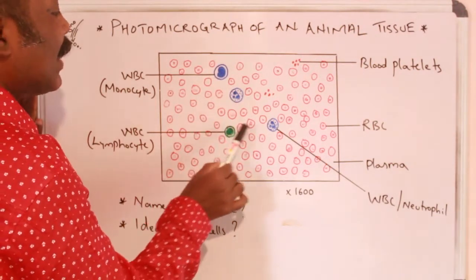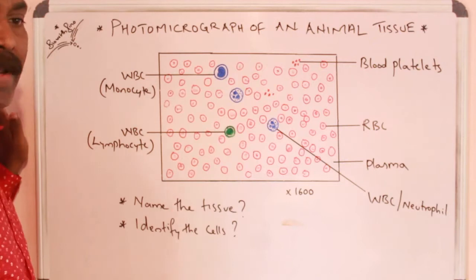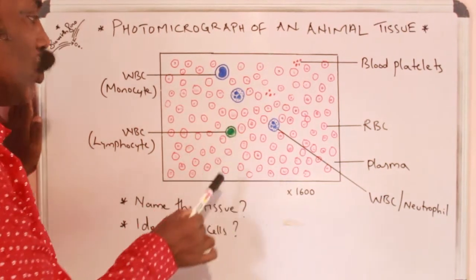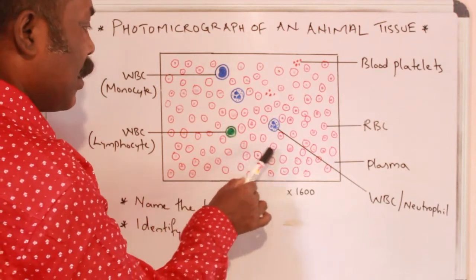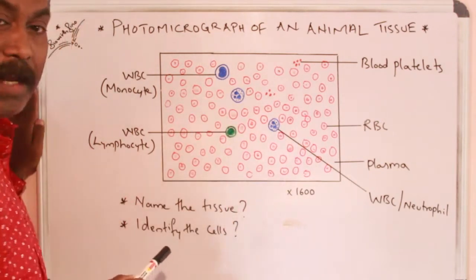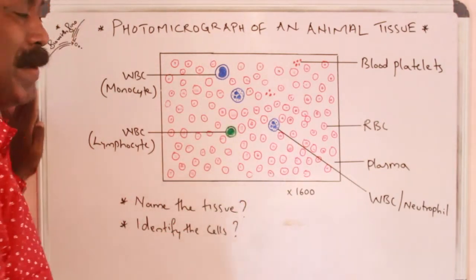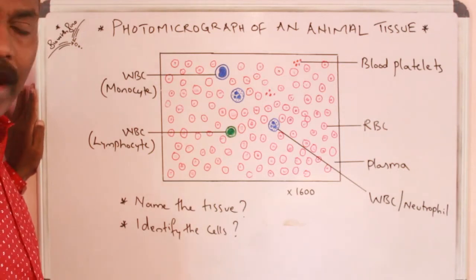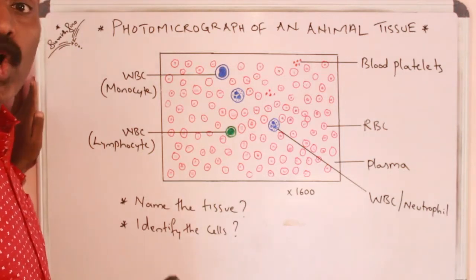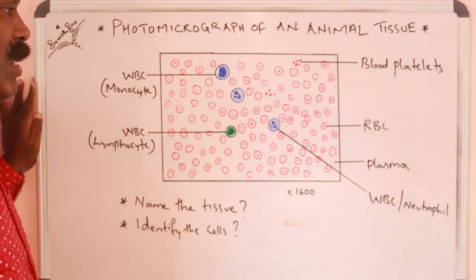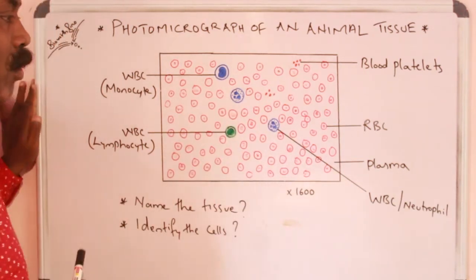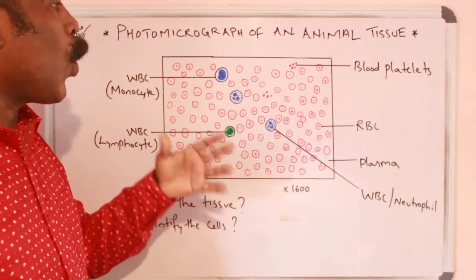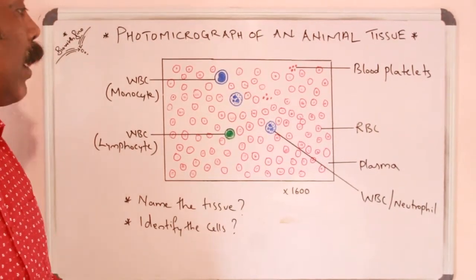To summarize labeling this blood photomicrograph: all cells with a nucleus are WBCs — very easy to identify. The red cells, of which there are plenty, are RBCs — they don't have a nucleus and are biconcave disc-like cells.